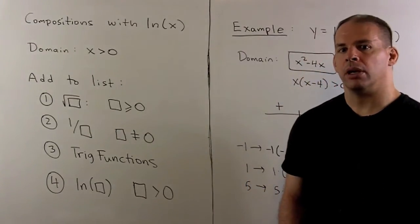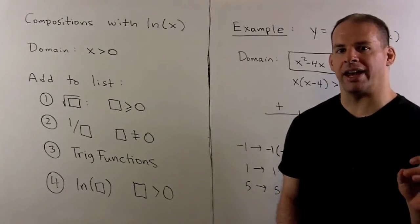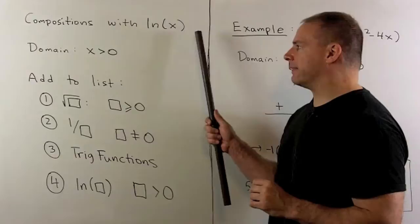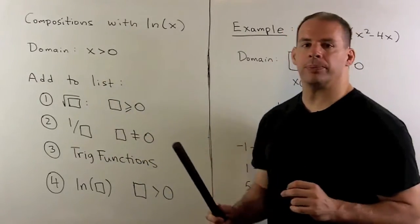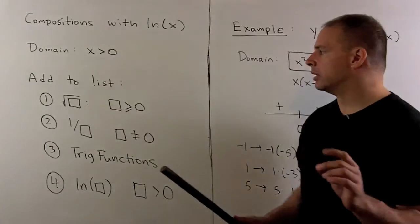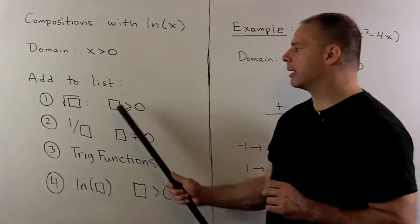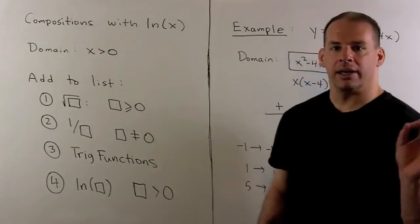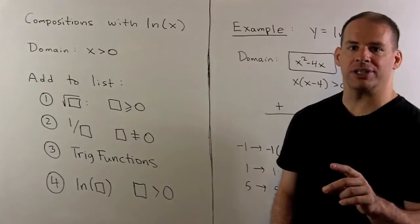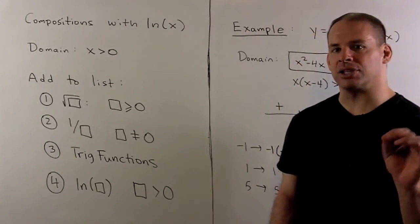For the next phase of natural logarithm study — derivatives and antiderivatives — first we need to make sure we understand how to use natural log in compositions. If I have natural log of x, the domain is just x greater than zero. We add this to our list of domain considerations: you can't take the square root of a negative number, you can't divide by zero, we have trig functions like tangent and secant, and now natural log of box requires box greater than zero.